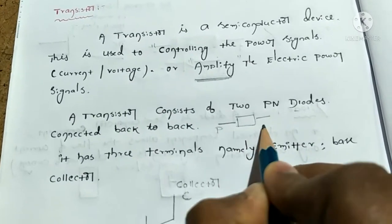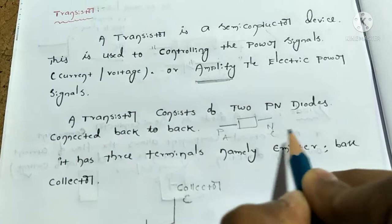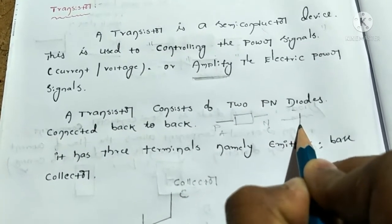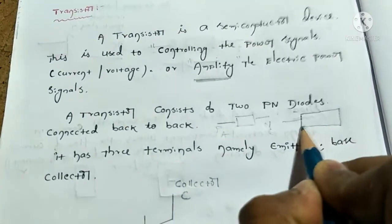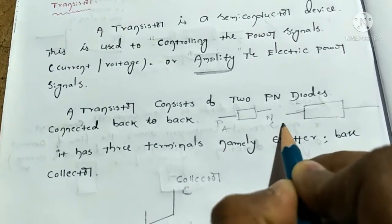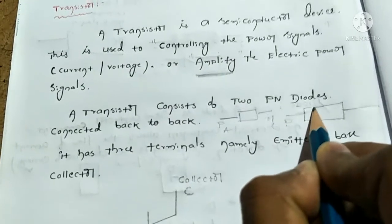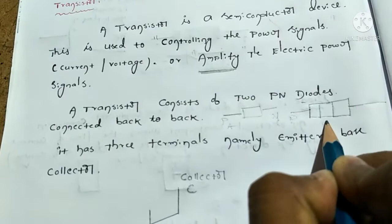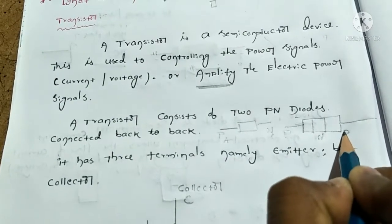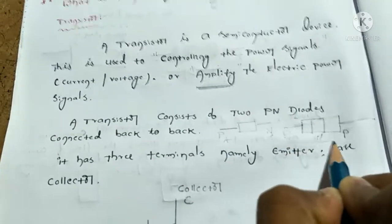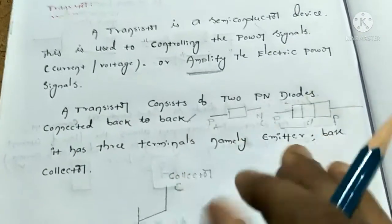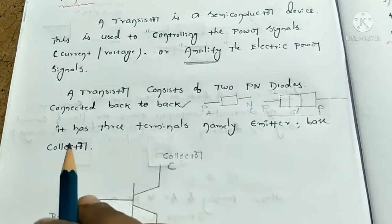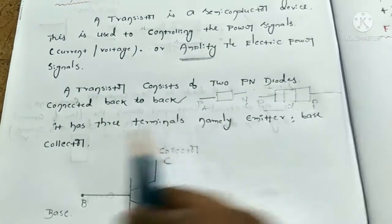A diode has a positive and negative terminal — anode and cathode. The diode is connected back-to-back to form a transistor. The transistor has three terminals, namely: emitter, base, and collector.